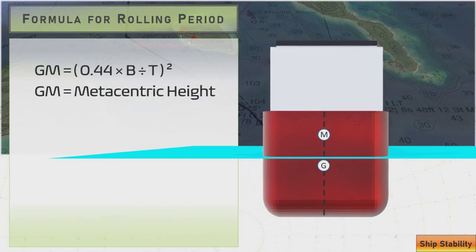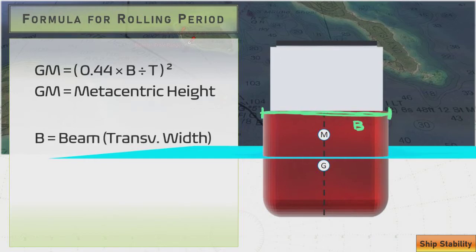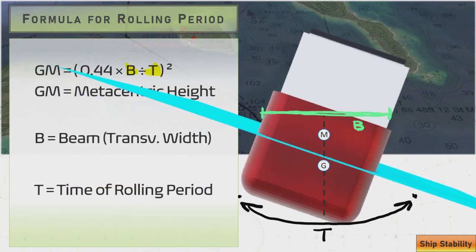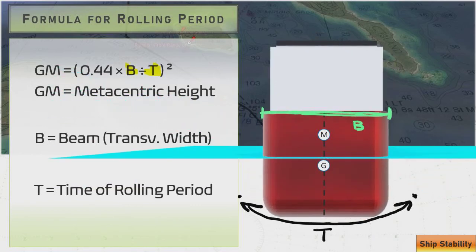In order to calculate our GM, we need a variable B, which is the beam or transverse width of our vessel, and we also need our T, which is our rolling period time in seconds. So rolling period is a full rolling cycle from side to the other side and then all the way back to the beginning side. You need to make sure that you're accounting for the entire roll. That's T and it's measured in seconds.